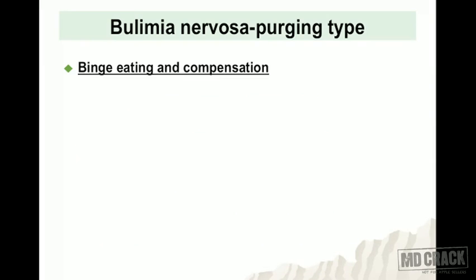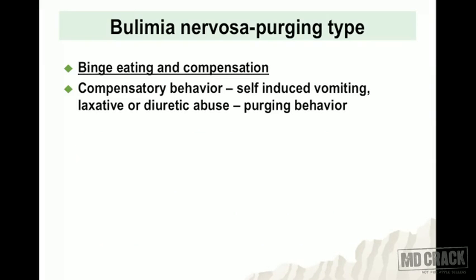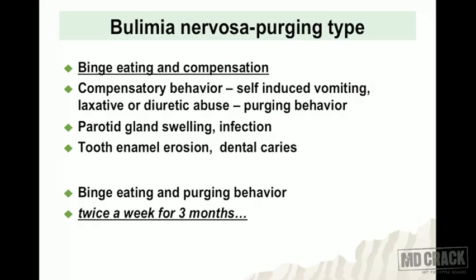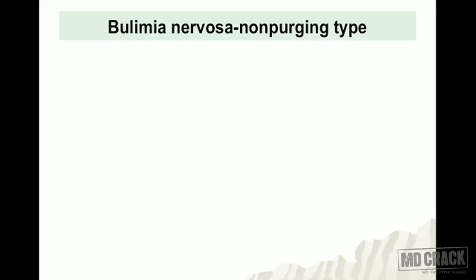Bulimia nervosa purging type involves binge eating and compensatory behaviors including self-induced vomiting, laxative or diuretic abuse. Physical findings include parotid gland swelling and infection due to repeated self-induced vomiting, tooth enamel erosion, and dental caries. The binge eating and purging behavior must be present at least twice a week for three months to diagnose bulimia nervosa purging type.